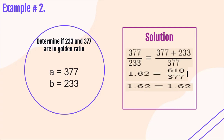So, is our given pair a Golden Ratio or not? The answer is yes — it is a Golden Ratio. 377 and 233 are in Golden Ratio because they are equal to each other. That concludes our report. We hope you learned something from our examples. Maraming salamat — thank you very much!